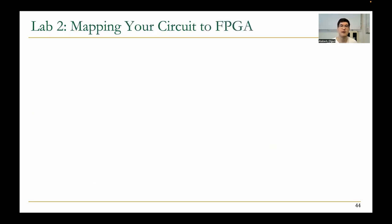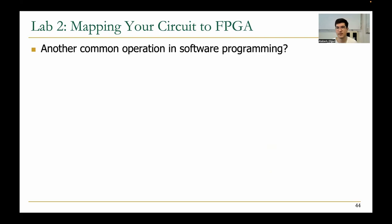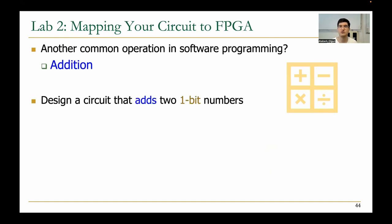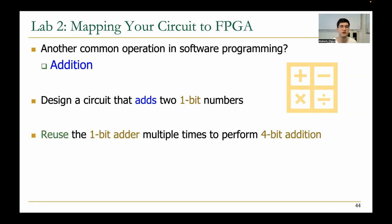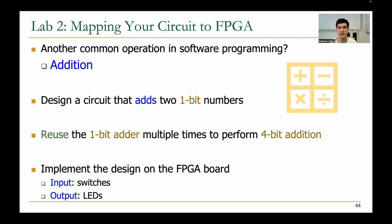In the second lab, you will map your first circuit to the FPGA. We will work with addition — another common operation in software programming. You will design a circuit that adds two 1-bit numbers, and you will reuse the circuit to develop a 4-bit adder. You will implement the design on the FPGA board, using switches as inputs and outputting the results of the 4-bit addition using the LEDs.